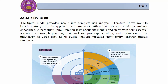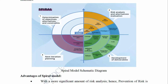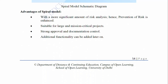3.5.2.5 Spiral Model: The spiral model provides insight into complete risk analysis. Therefore, if we want to benefit entirely from the approach, we must work with individuals with solid risk analysis experience. A particular spiral iteration lasts about six months and starts with four essential activities: planning, risk analysis, prototype creation, and evaluation of the previously delivered part. Spiral cycles that are repeated significantly lengthen project timelines. Advantages: A more significant amount of risk analysis, hence prevention of risk is enhanced. Suitable for large and mission-critical projects. Strong approval and documentation control. Additional functionality can be added later on.